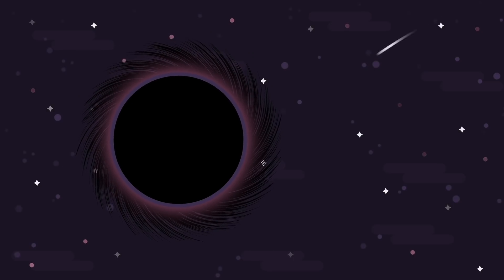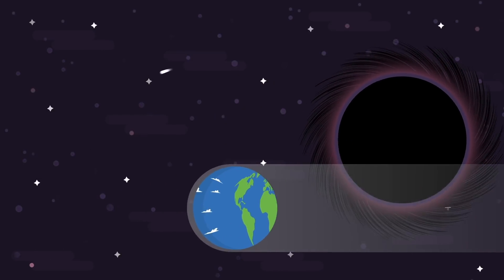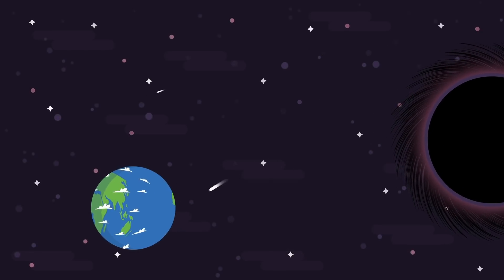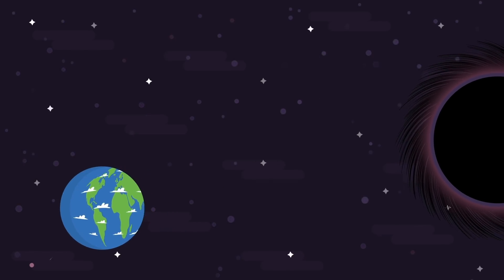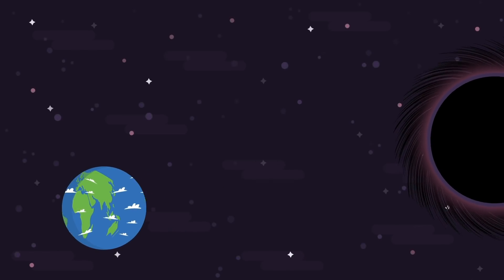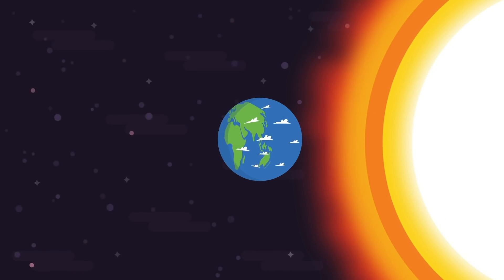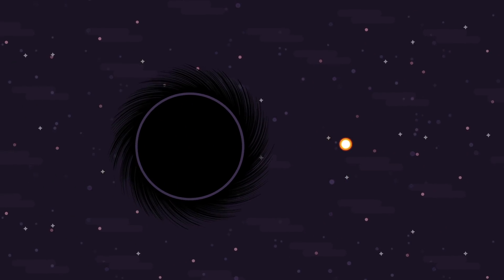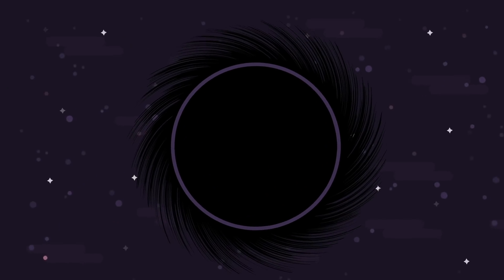Black holes have gravitational fields so strong that just passing by a planet like Earth would cause it to be pushed into a completely different orbit and potentially into the Sun.